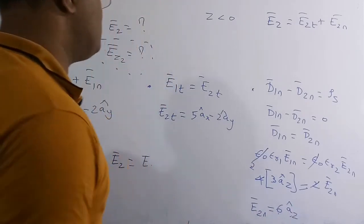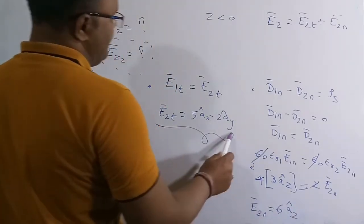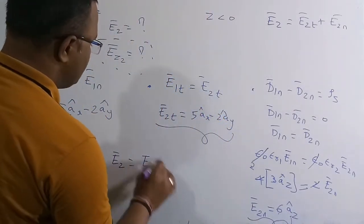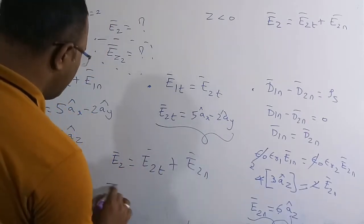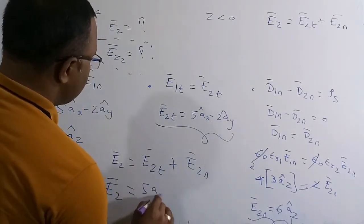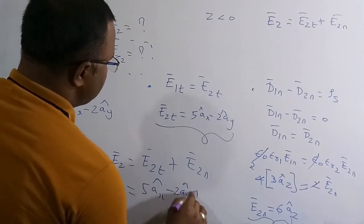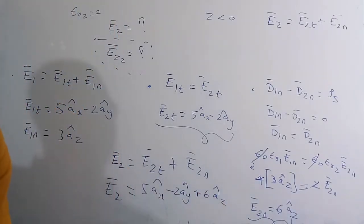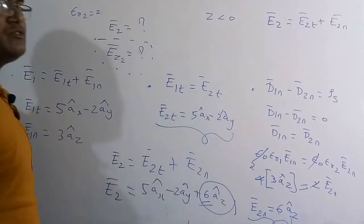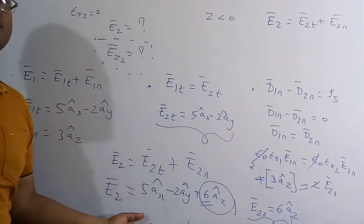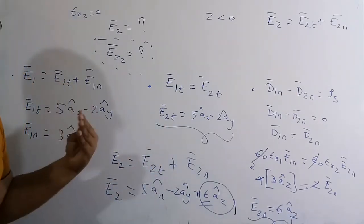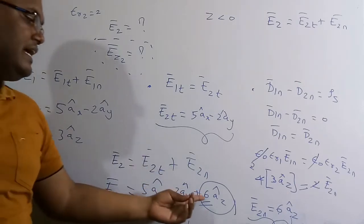Adding tangential and normal components: E2 equals 5 a_x cap minus 2 a_y cap plus 6 a_z cap. The question specifically asks for the z-component in the region below the interface, which is 6 a_z cap. So 6 a_z cap is the correct solution.